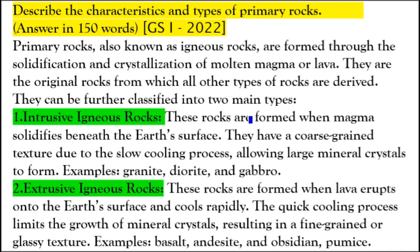Intrusive igneous rocks are formed when magma solidifies beneath the earth's surface. They have a coarse-grained texture due to the slow cooling process, allowing large mineral crystals to form. Examples are granite, diorite, and gabbro.